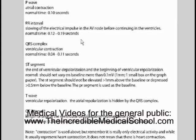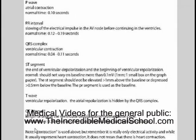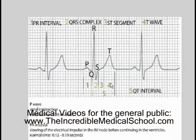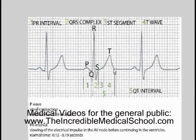The T wave represents ventricular repolarization. The QT interval is the length of time for the ventricle depolarization to repolarization cycle. The normal time is 0.36 seconds to 0.44 seconds, and it should be less than half the distance of the RR distance. Going back to our graph, the PR interval baseline is used to measure where the ST segment should be.